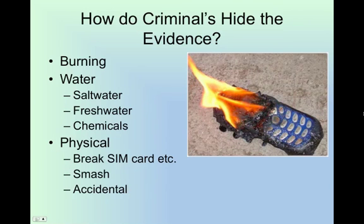Most criminals are very smart when it comes to hiding their tracks. A few of the ways to destroy mobile cellular device evidence is by burning the phone, destroying the phone with water, or physically destroying the phone. Each of these tactics makes it 100% impossible to get evidentiary information from the cellular device itself, although evidence can still be received from logs at the service provider.